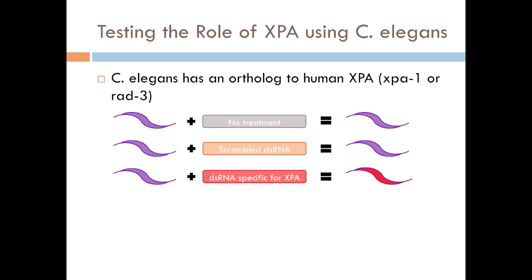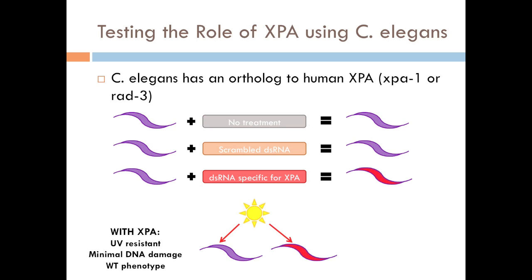If we treat the control worms with UV rays, we should see UV resistance because cells would still be able to perform NER. However, the mutant worms without XPA should be UV sensitive because the cells cannot perform NER without XPA. This would support our hypothesis that XPA is required for NER, and its loss plays an important role in Xeroderma Pigmentosum.